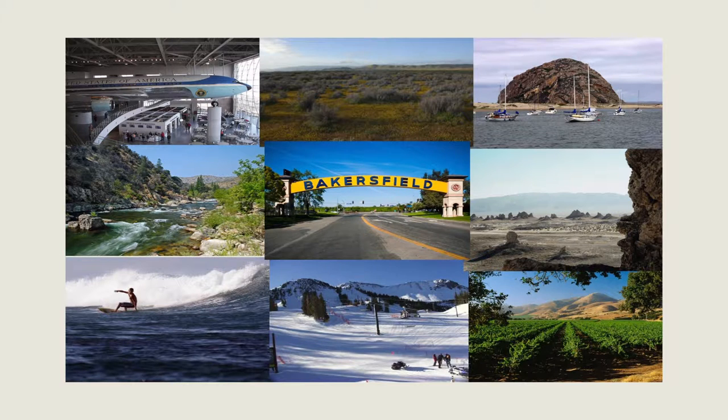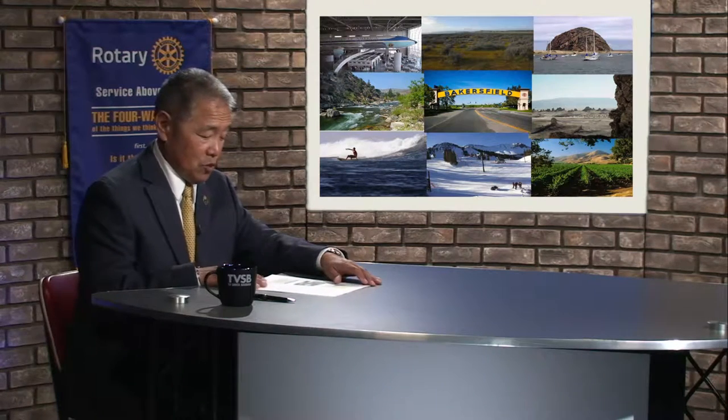The next slide shows pictures of all the different areas — everything from deserts to alpine forests to the ocean to the mountains. I put Bakersfield right in the middle because geographically that's pretty close to the center of our district. We are probably geographically one of the most diverse districts in the world. We are right next door to Death Valley, the lowest point in North America, and very near to Mount Whitney, the highest point in the contiguous United States — all within just a few miles of our district boundaries.